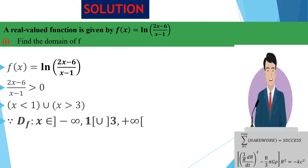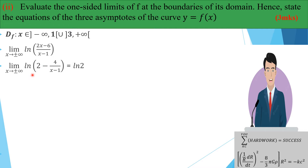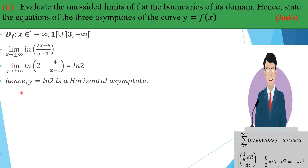Next, evaluate the one-sided limits at the boundaries of the domain, hence find the three asymptotes. We first look at the limit as x tends to infinity. Using partial fractions, the function becomes 2 minus a term that tends to zero, leaving ln(2). So y = ln(2) is a horizontal asymptote — whenever the limit as x tends to ±∞ is a constant, that constant is a horizontal asymptote.